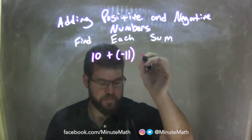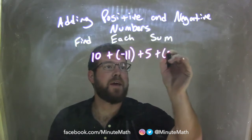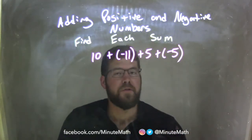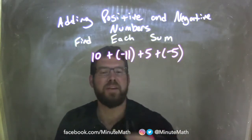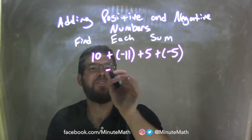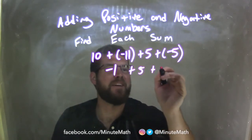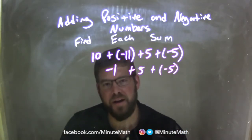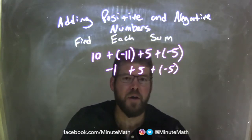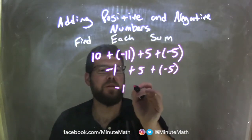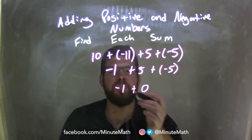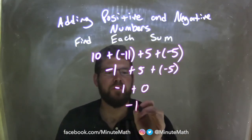10 plus negative 11 plus 5 plus a negative 5. They're all addition, so let's go left to right. 10 plus a negative 11 is the same thing as 10 minus 11, which is negative 1. I also look at 5 plus a negative 5, which comes out to be 0. I always look for numbers that are opposites — they cancel each other out. So now we have negative 1 plus 0, which is just negative 1. That's my final answer.